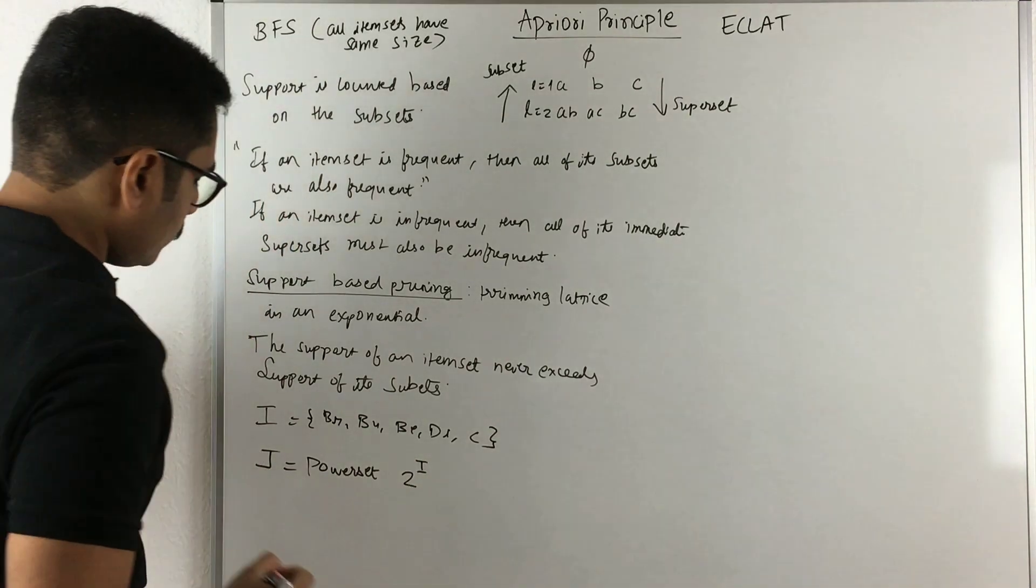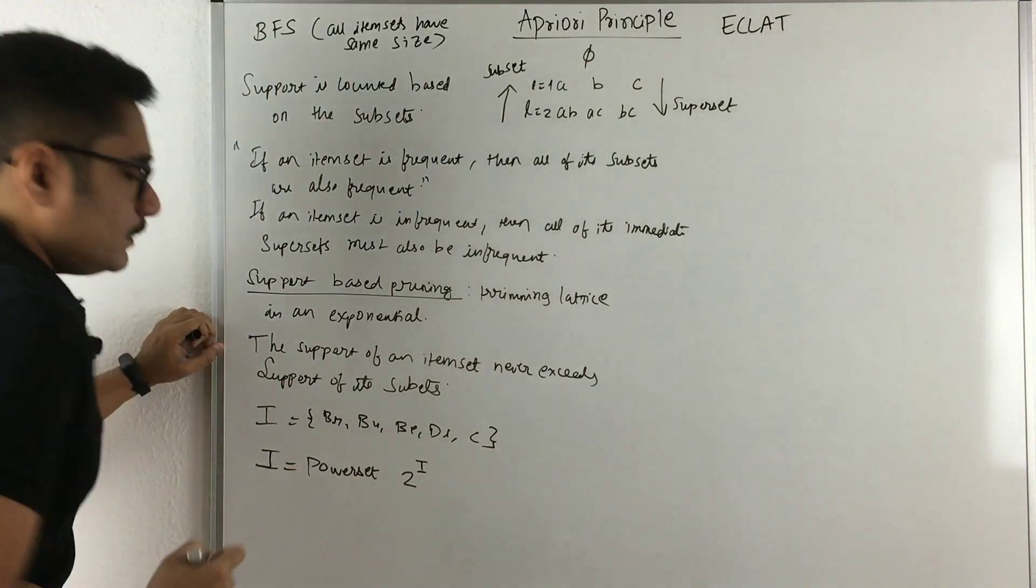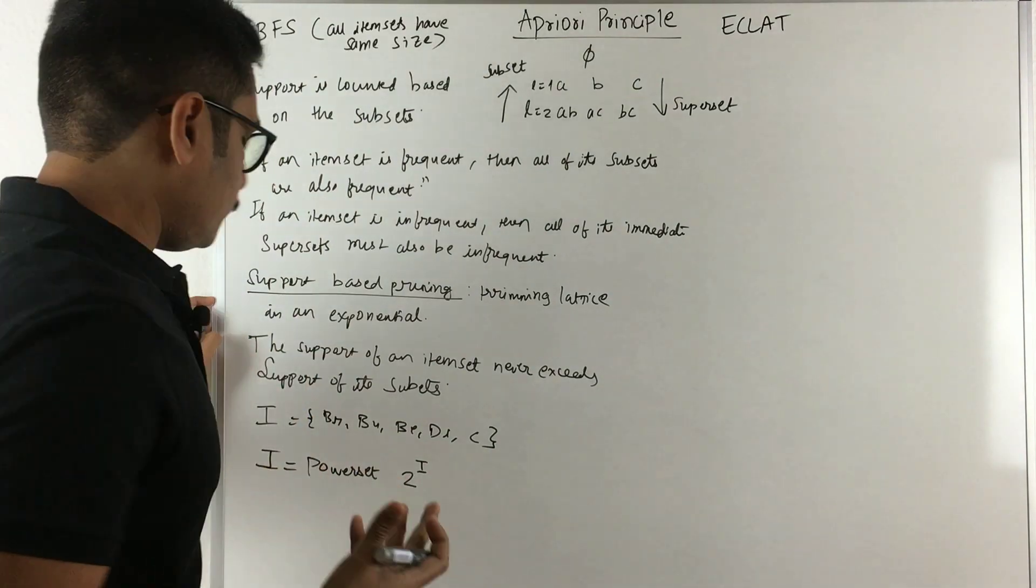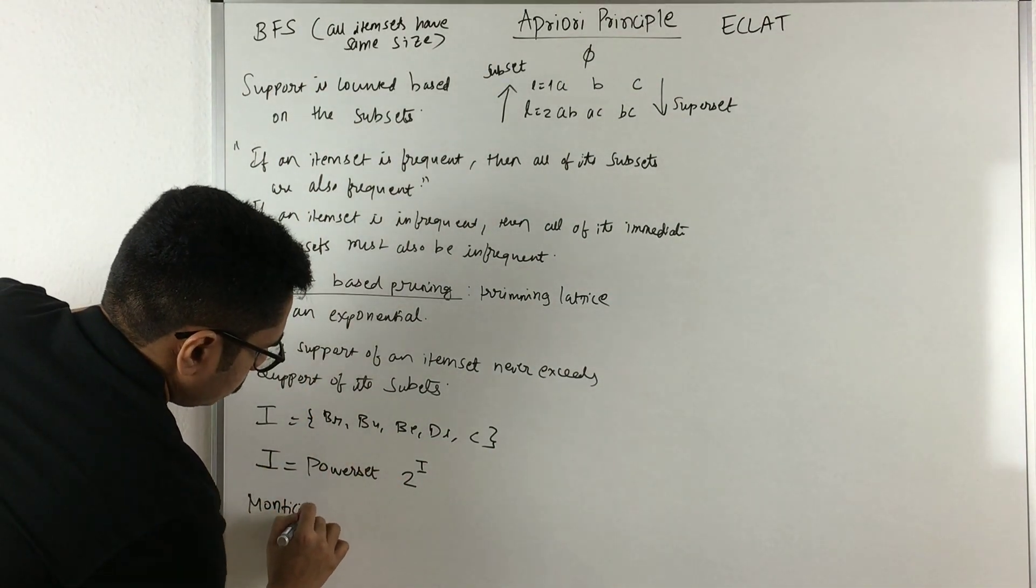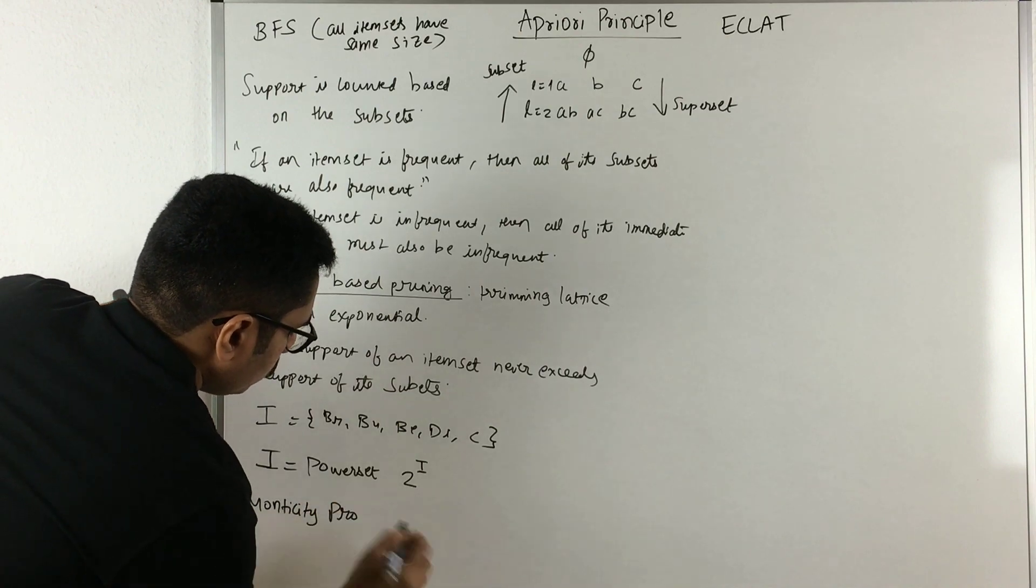Then represent J as the power set of this I. Power set means you have all 2 raised to I possible number of items. Now there is a principle or property which is called the monotonicity principle or the monotone property.